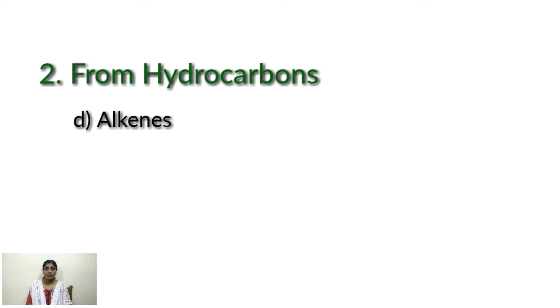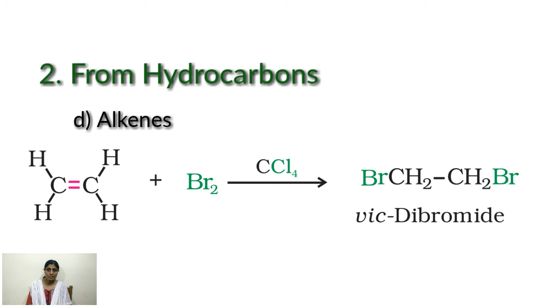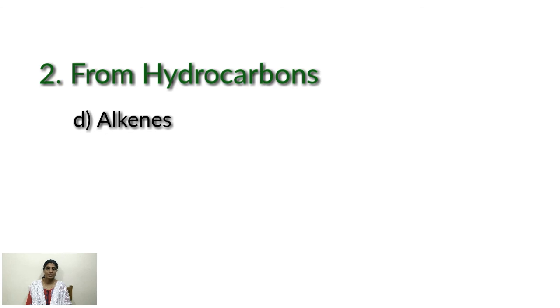Second one from alkenes, by addition of halogens. Addition of bromine in CCl4 results in the synthesis of vicinal dibromide which are colorless. For example, CH2=CH2 plus bromine in CCl4, you are getting vicinal dibromide. The addition of bromine in CCl4 is used as a test for saturation, or we can say that it is used for detection of double bond in qualitative analysis. The reddish brown color of bromine becomes colorless. That is the test by forming vicinal dibromide.